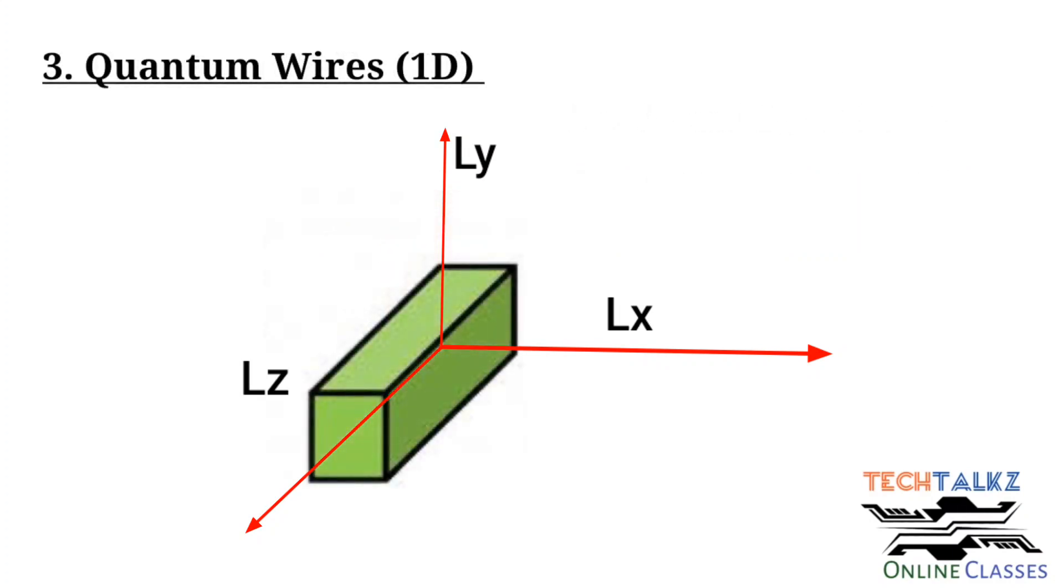The next case, here the dimensions across x and y axis are restricted within 100 nanometer or within the characteristic length lambda. At the same time, the electron is free to move across the z axis. Length across z axis, that is Lz, is much greater than Lx and Ly.